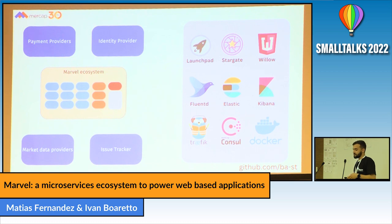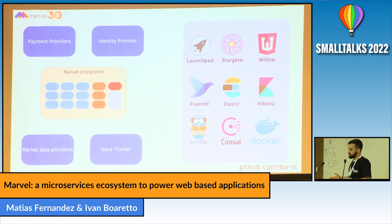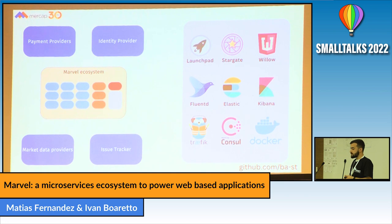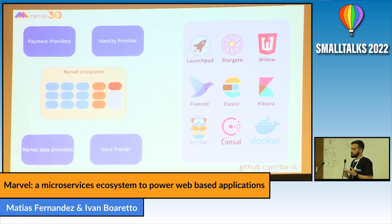Another thing this architecture allowed us was language interoperability. That means if one service needs to be in another language for any reason — maybe because it's already developed in that language or it's easier to develop in that language — we can easily connect using this architecture. It's just a matter of spinning up a new instance and connecting it through an API.